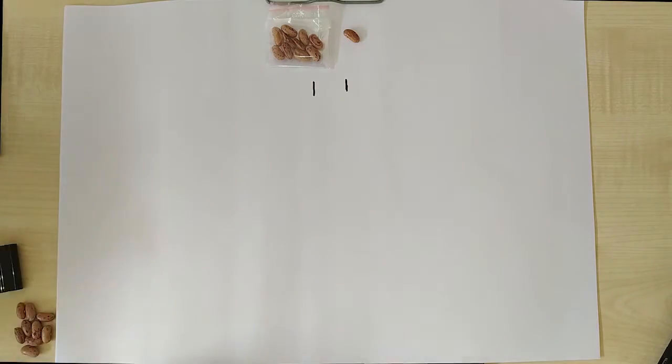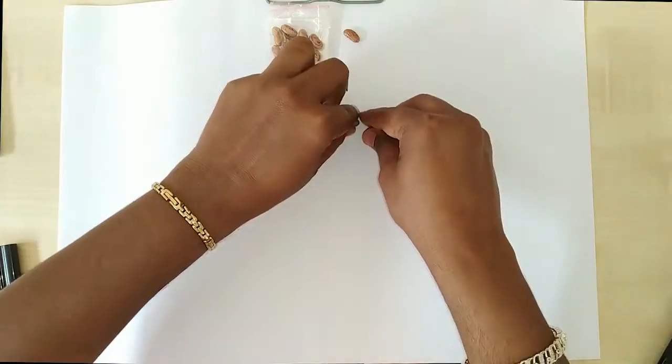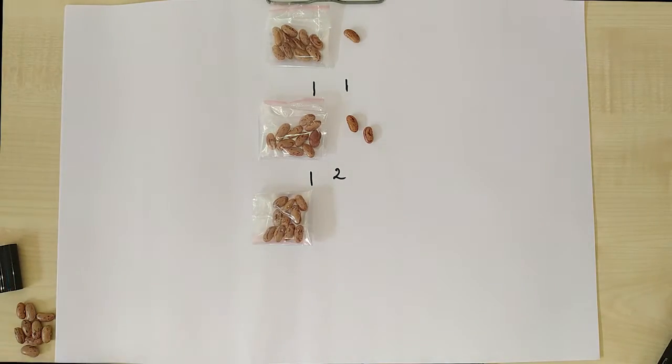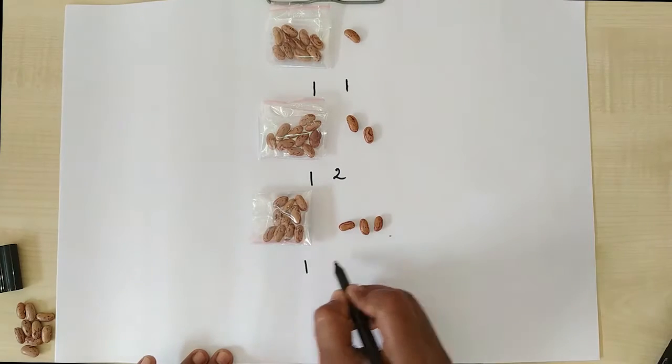Similarly, when we add more beans one by one, we get a 1 on the left and a 2 on the right, which is 12 and then 13 and 14, etc. Since this is important, let us emphasize this once more.